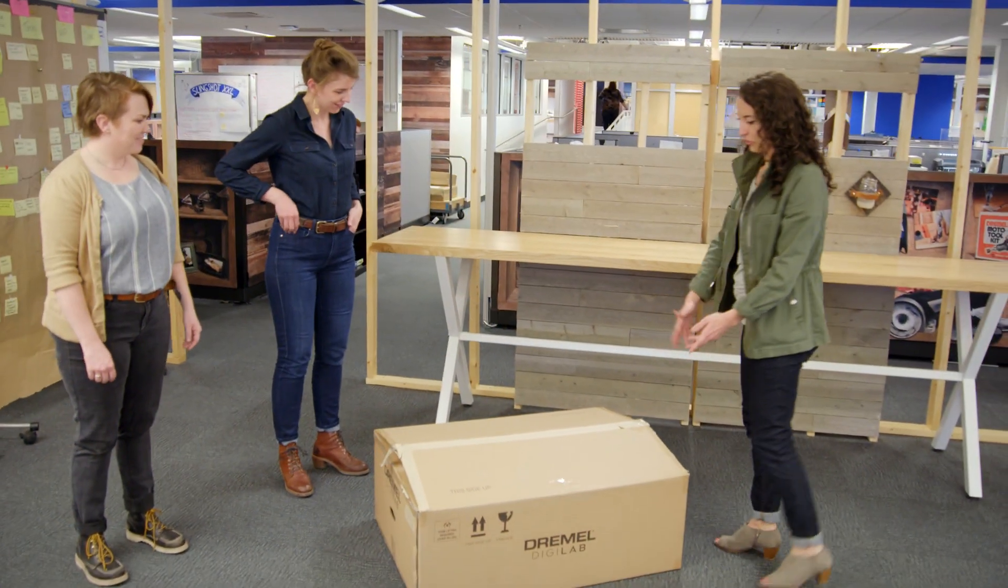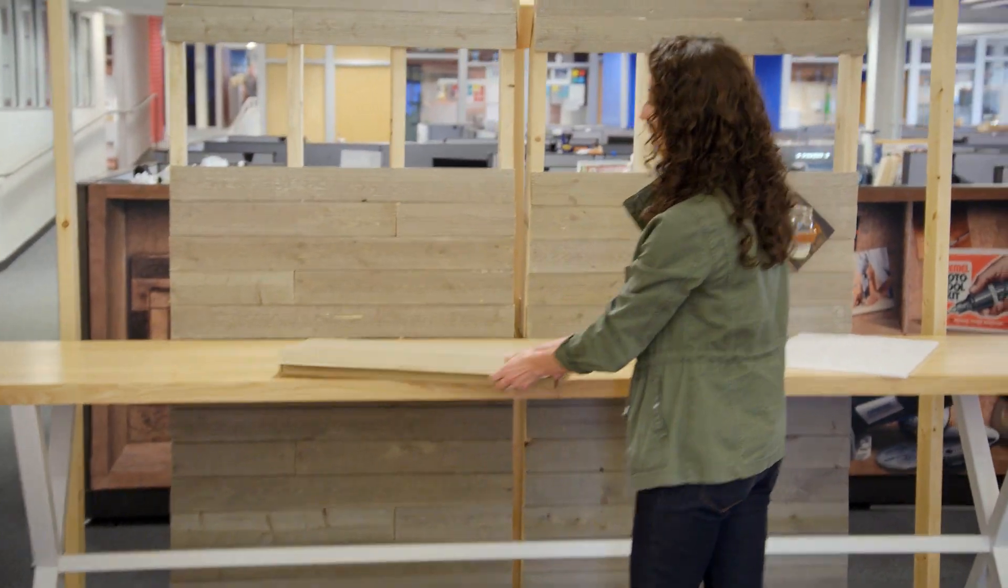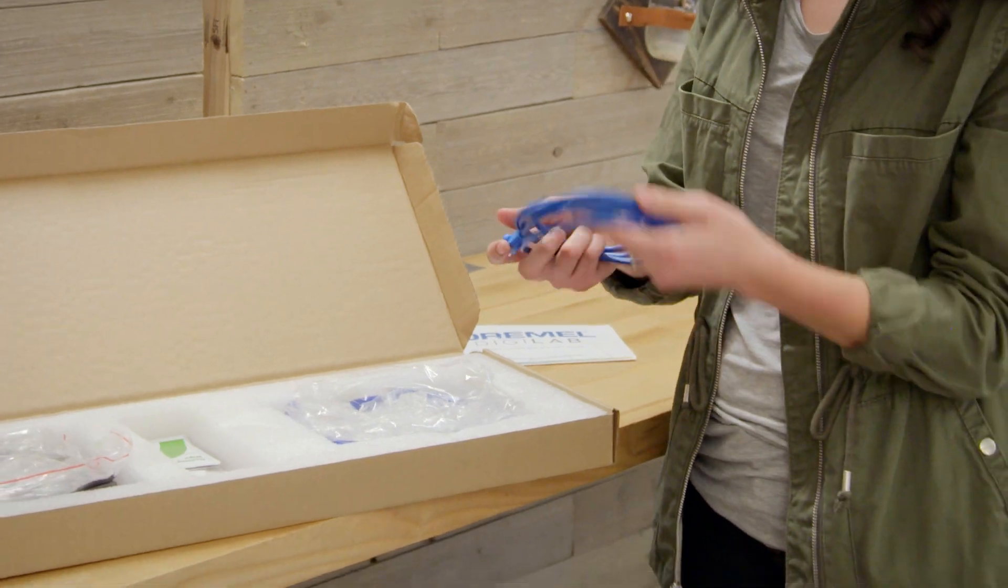This is our Dremel DigiLab laser cutter. The first box is going to contain the majority of your accessories. This one is going to have your quick start guide, your Ethernet cords, two different tubes.